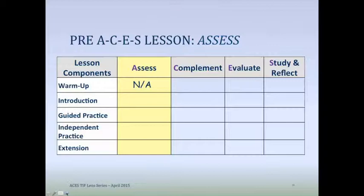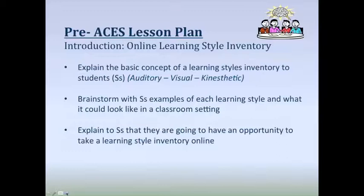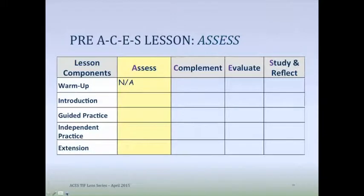For the introduction: one way to integrate learners' educational goals into instructional practices was to have students do an online learning style inventory — or one in paper. Students brainstormed about auditory, visual, and kinesthetic learning styles, and then would have an opportunity to take the online learning style inventory. Looking at the introduction, can you chat out which skills or sub-skills from the TIF at a Glance you can identify? Jennifer jumps in with 1A — wonderful, way to kick us off. Yes, we have 1A in there.